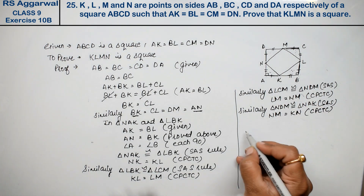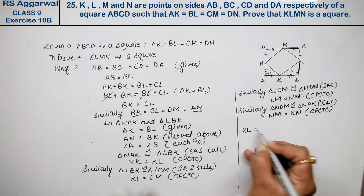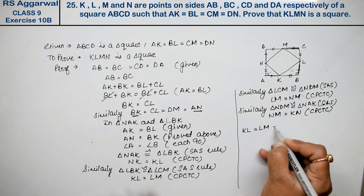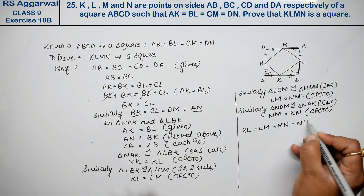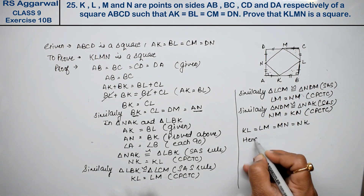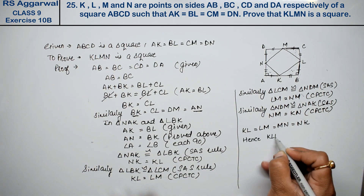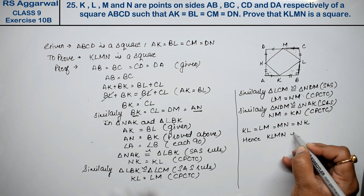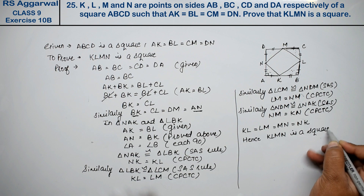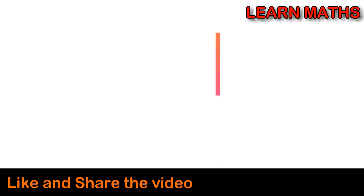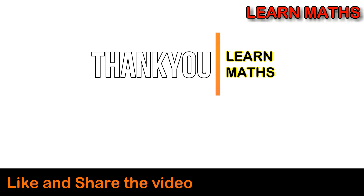Now all sides are equal. We can say KL equals LM equals MN equals NK. Hence KLMN is a square. Thank you. If you understand this step-by-step solution, please subscribe to my channel on Maths and share it with your friends. Thank you.